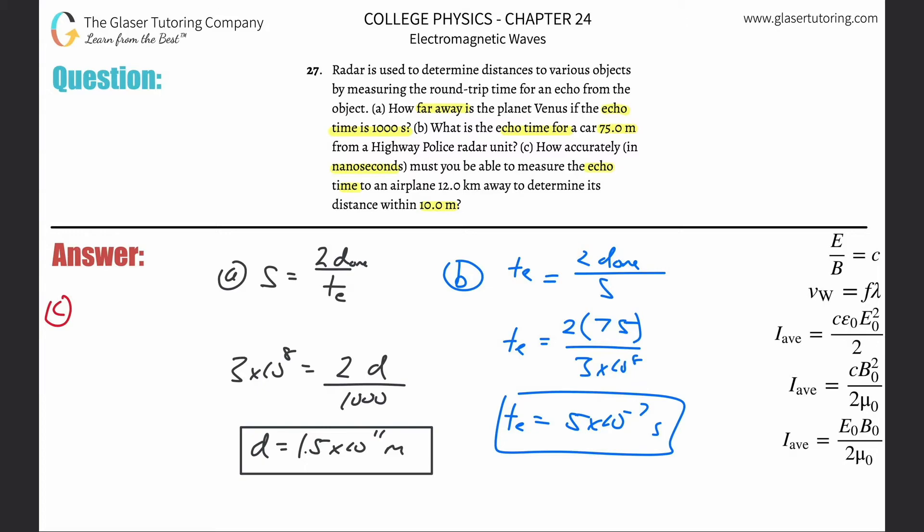Why don't we start with the speed is going to be equal to 2 times the one-way distance divided then by the echo time. So I want to solve this for echo time. Now remember this is 2 times the one-way distance. Now, essentially, if we want to measure the distance within 10 meters, that means that this is the important quantity that I have to plug into my formula here.